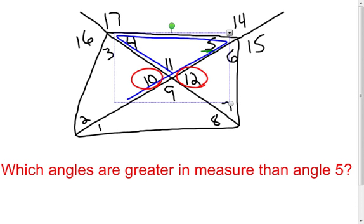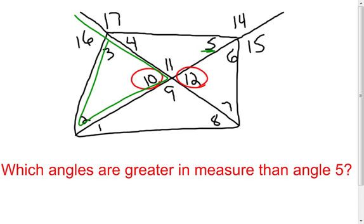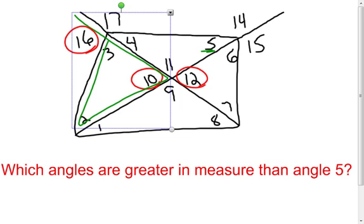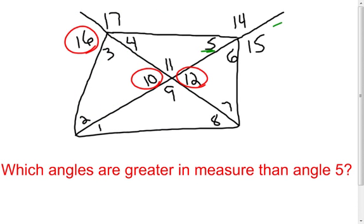Now I'll highlight another triangle and look at angle 10 as the remote interior angle. In this triangle, angle 16 is the exterior angle. The exterior angle is always larger than the remote interior angle, so the measure of angle 16 is larger than angle 10, which was already larger than angle 5. Therefore angle 16 is larger than angle 5. Going the other way, using angle 12 as the remote interior angle, angle 15 is the exterior angle — so angle 15 is larger than angle 12, which is larger than angle 5.